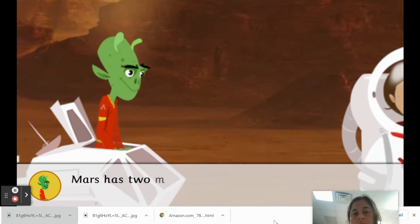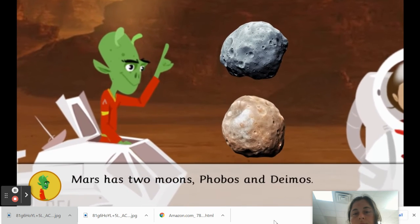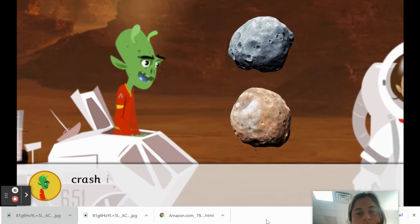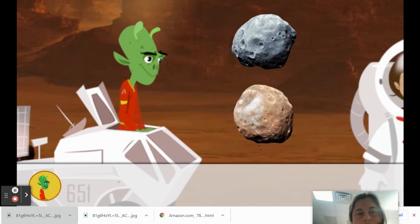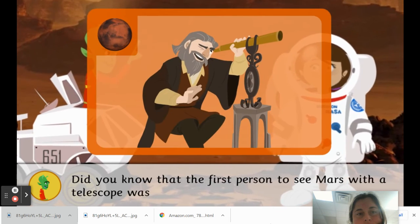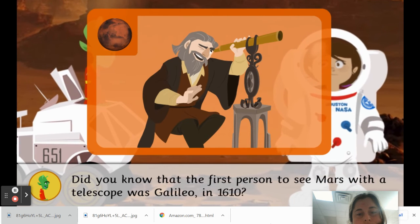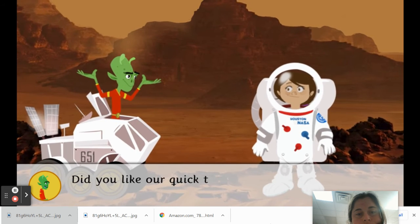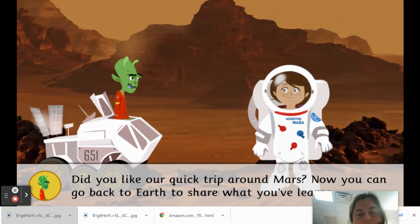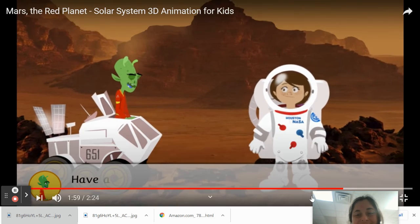Mars has two moons, Phobos and Deimos. Phobos keeps getting closer and closer and will eventually crash into Mars. Did you know that the first person to see Mars with a telescope was Galileo in 1610? Did you like our quick trip around Mars? Now, you can go back to Earth to share what you've learned. Have a good trip!